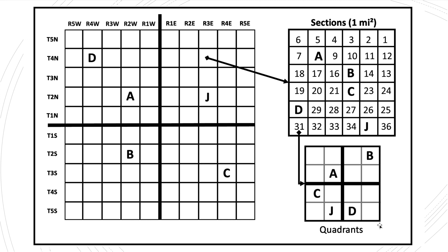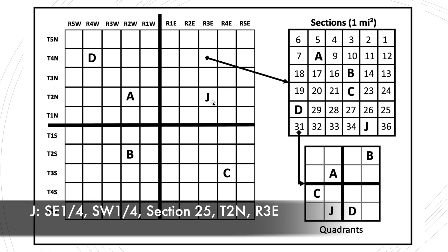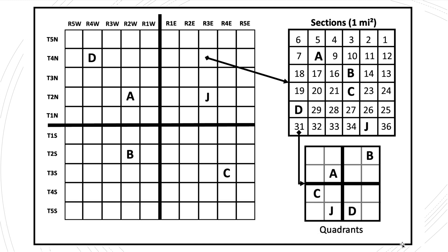Well, J is down here. J is part of the southeast quadrant of the southwest quadrant of section number 35, which is part of Township 2 North and Range 3 East, and that would be the public land survey of that 40-acre parcel of land.